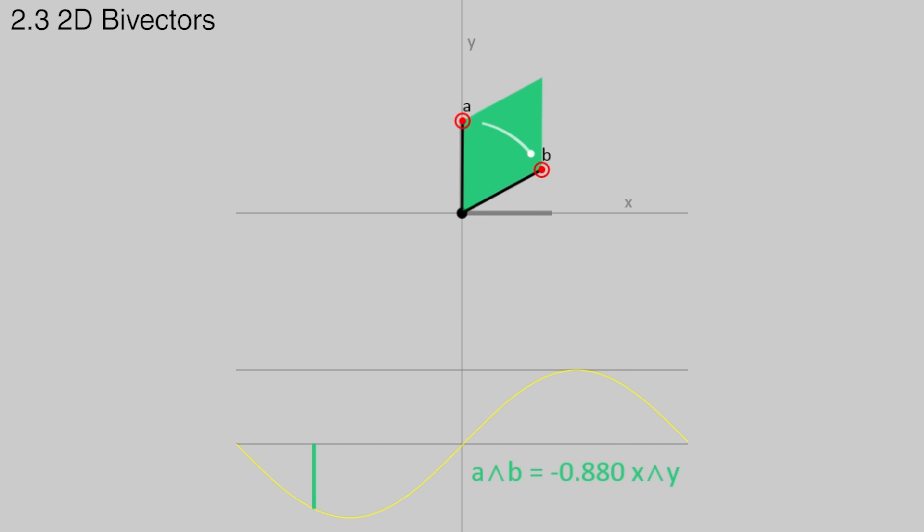Just like the sense of a rotation matters, the order of the arguments to the outer product matters. Swapping arguments changes the sign of the result. This is called anti-symmetric. Here, the sign is represented using the color, which changes from blue to green.